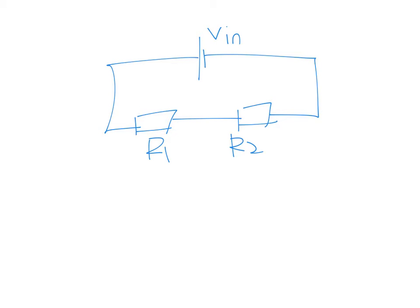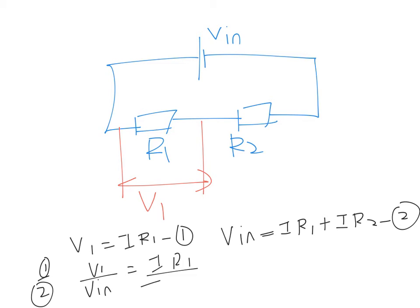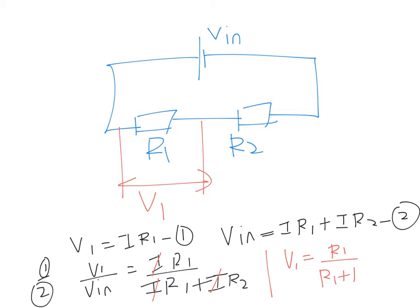So the PD across this first resistor, let's call it V1. According to our formula for voltage, V1 must be equal to IR1. And your V in, which is your total voltage, must be equal to IR1 plus IR2. So if this is your first equation and this is your second equation, we take equation 1 over equation 2. So you get V1 over V in equals IR1 over IR1 plus IR2. All the I cancels, so finally you get V1 equals R1 over R1 plus R2 times V in.